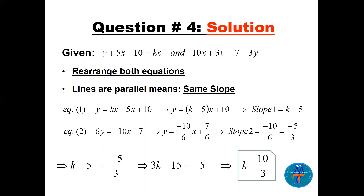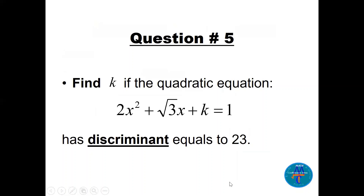For equation 1, solve for y: bring kx terms together and factor out x — the coefficient of x after solving for y is slope 1. For equation 2, bring 3y to one side: (−10x + 7)/6, giving slope 2 = −5/3. Set slope 1 equal to slope 2 and cross-multiply: 3k − 15 = −5, so k = 10/3.